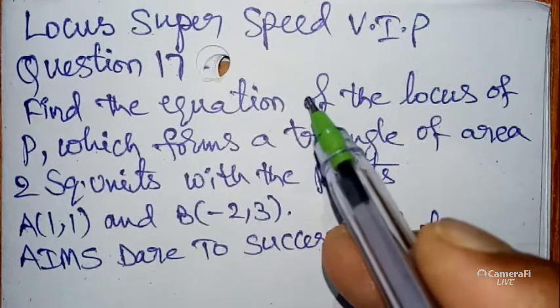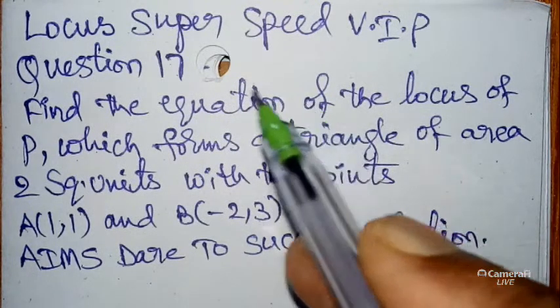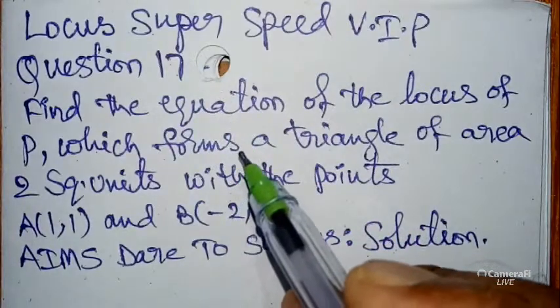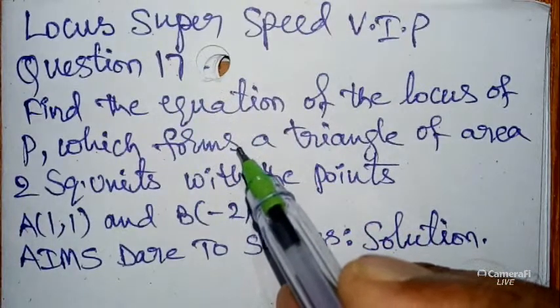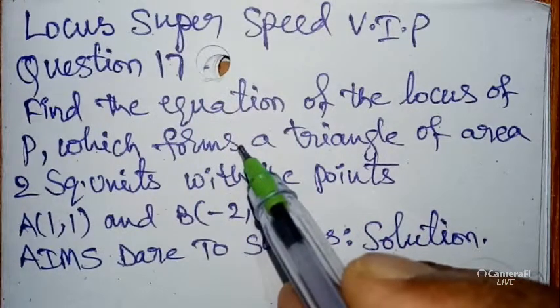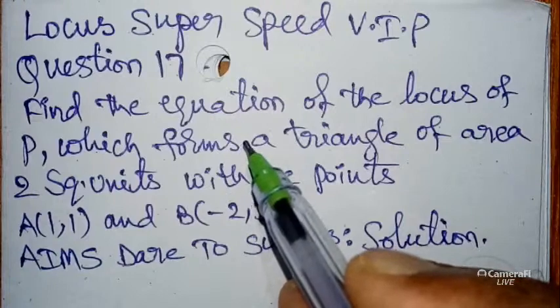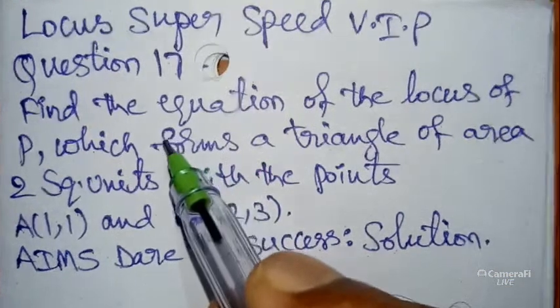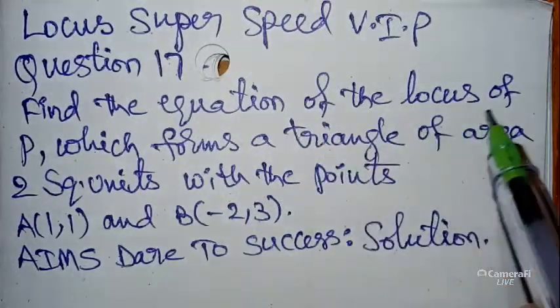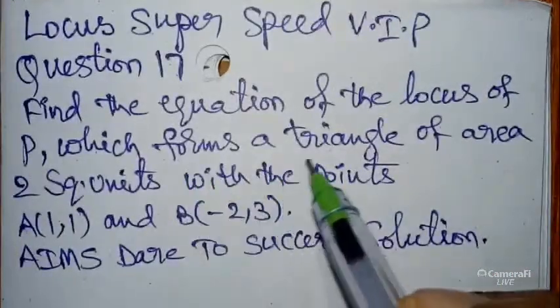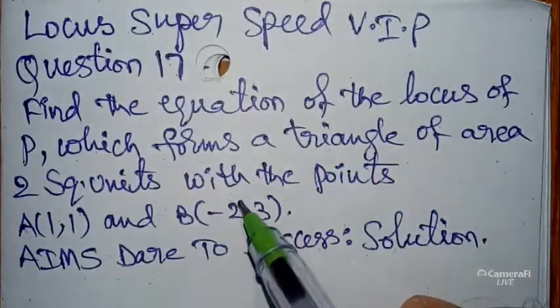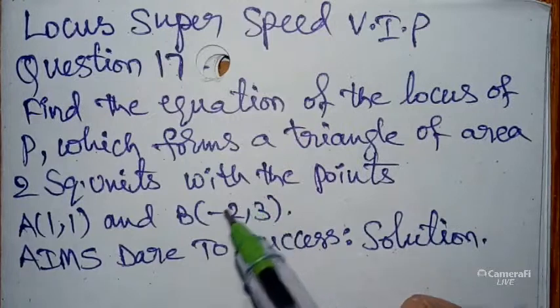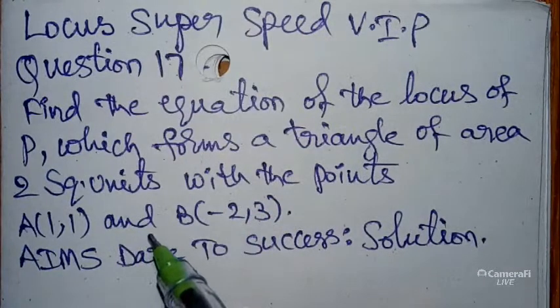I am very happy to say I have already uploaded VIP Question 16 and VIP questions from the Locus chapter, so please go through those all questions. I promise you 100% sure success will come to you automatically. Find the equation of the locus of P which forms a triangle of area 2 square units with the points A(1,1) and B(-2,3).